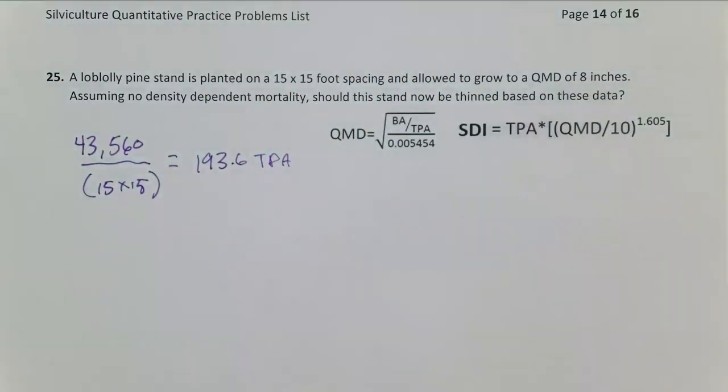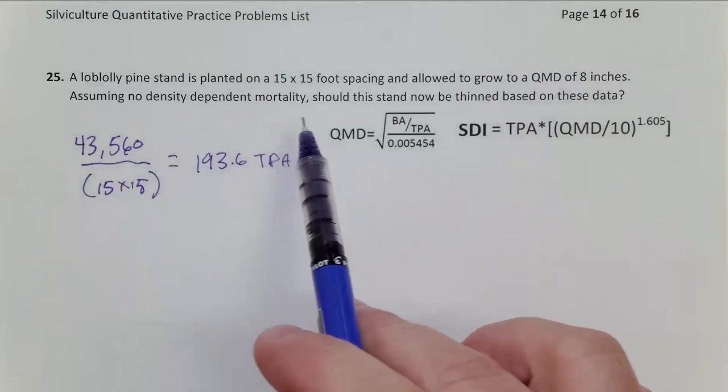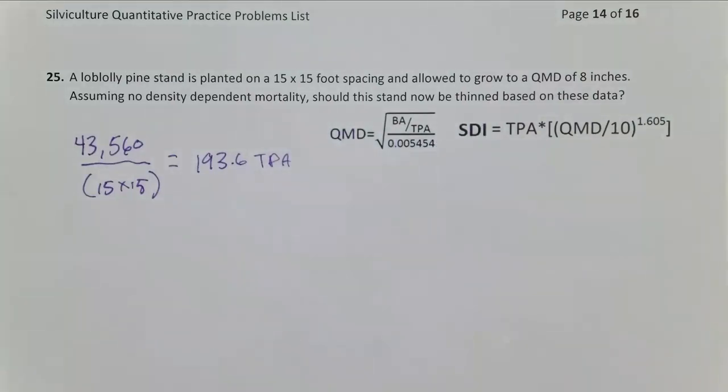So now we have trees per acre and QMD. We've assumed that it's density-dependent mortality since initial planting. So that's still our correct trees per acre. So now we can go straight into our normal process here.